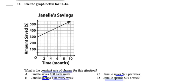Hopefully you didn't turn your paper in — there are three more questions. Question 14: what is the constant rate of change for this graph? A says Janelle saves $50 a week. B says Janelle spends $50 a week. C says Janelle saves $25 a week. D says Janelle spends $25 a week.